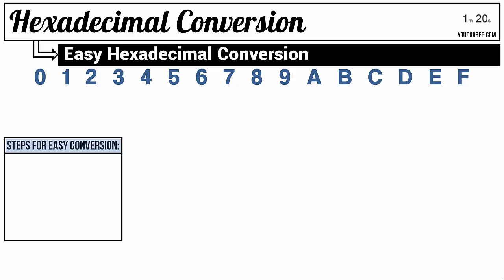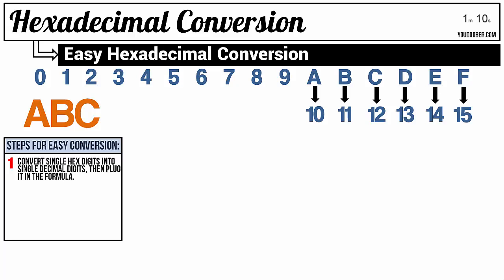A through F have specific decimal counterparts. In this example, we're going to convert the hexadecimal number ABC. To do this simply, we're going to convert the single hexadecimal digits ABC into their decimal counterparts and then plug them into our formula.